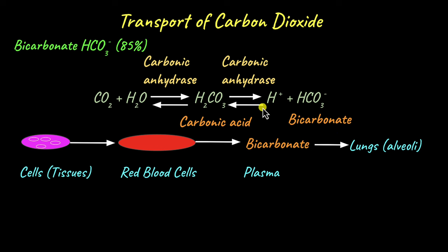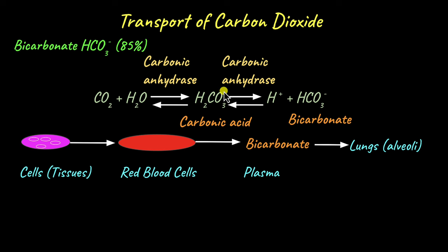Within the lungs, the reverse of this reaction takes place. When bicarbonate ions reach the lungs, they come back inside the red blood cells, where bicarbonate ions bind with hydrogen ions in the presence of carbonic anhydrase. That gives carbonic acid, which immediately dissociates into water and carbon dioxide. The carbon dioxide is now inside the red blood cells in the lungs and diffuses out into the lungs to be exhaled.